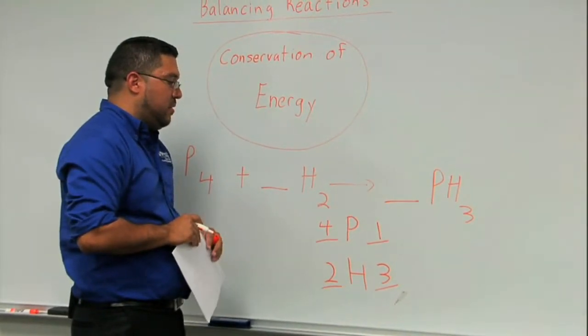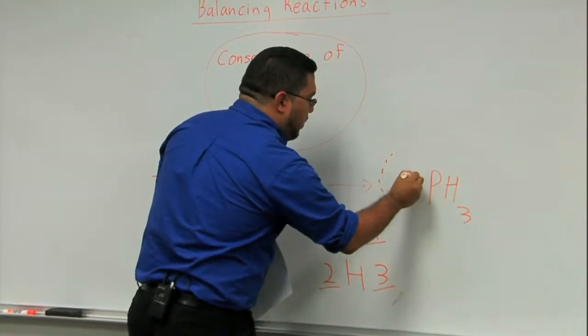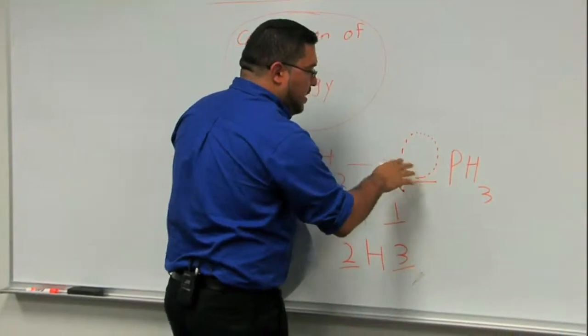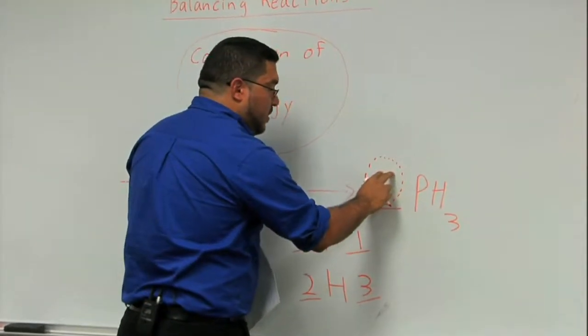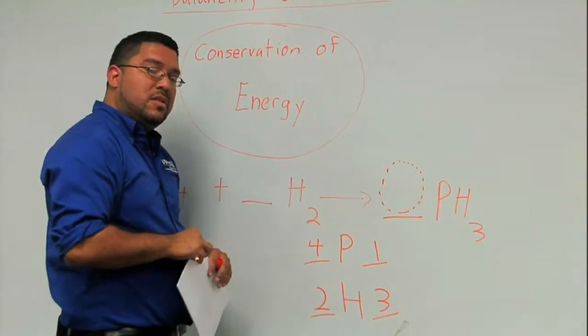Coefficients are numbers that go in front of your compound or element. What you're going to do is multiply your coefficient times your subscript to try to balance your reaction. So let's go ahead and try to balance ours.